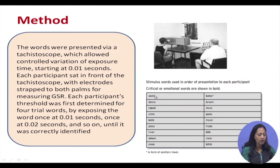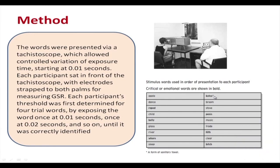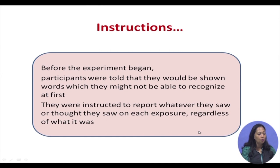The experimental stimuli were then shown — most of the critical words related to vulgarity or taboo words in society. Before the experiment began, participants were told they would be shown words they might not be able to recognise at first. They were instructed to report whatever they saw or thought they saw on each exposure — even at 0.01 seconds — regardless of what it was.